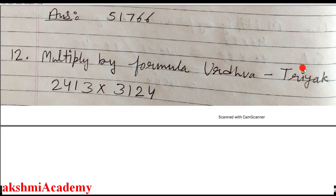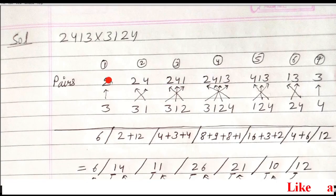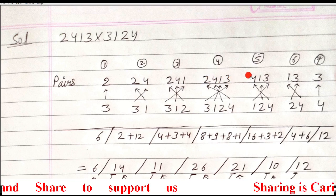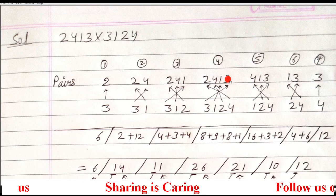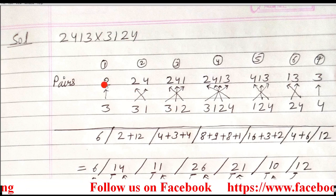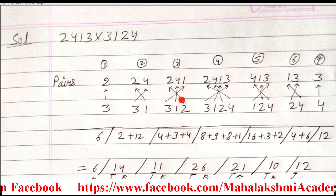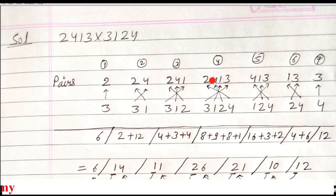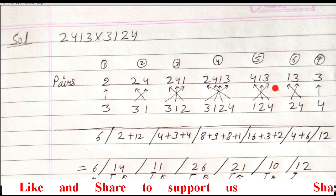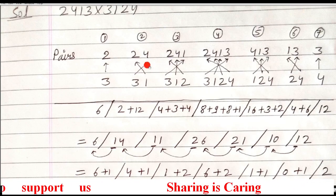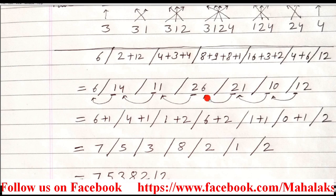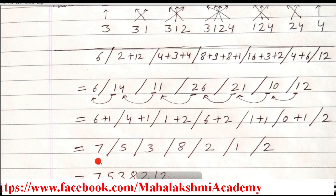In the next section, also Urdhva Tiryak method. Make pairs for the 4-digit multiplication: first 2, then 24, then 241, then 2413. Then reduce: remove 2, then 24, then 241, leaving 3. Make the group similarly for the second number, and put arrows. If 3 numbers are in a group, use cross and middle arrow. If 4 numbers are in a group, cross the extreme numbers. For 2 numbers like 41 and 12, alternate the cross. Multiply along the arrows to get the products.